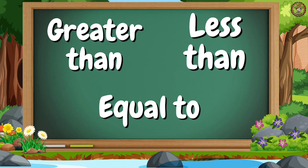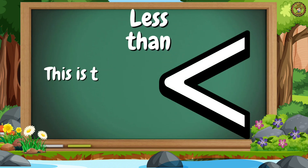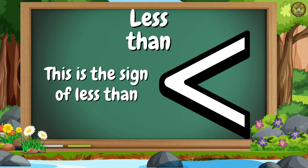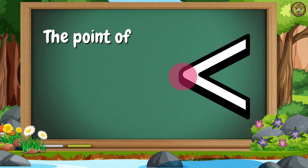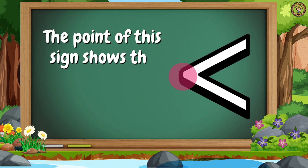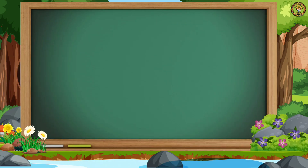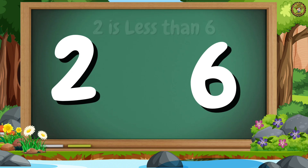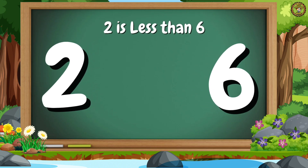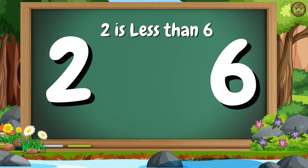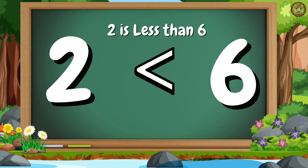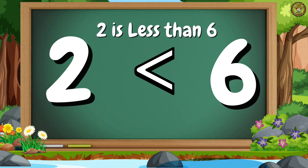Then, we will learn about less than. This is the sign of less than. The point of this sign shows the smaller number or quantity. Let's take an example with two numbers: 2 and 6. The number 2 is less than number 6. We use the sign of less than between these numbers because 2 is less than 6.